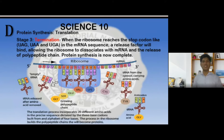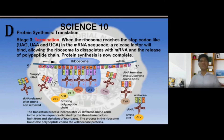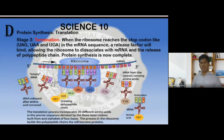The third stage is termination. When the ribosome reaches a stop codon — UAG, UAA, or UGA — in the mRNA sequence, a release factor will bind, allowing the ribosome to dissociate from the mRNA and the polypeptide chain to be released. Protein synthesis is now complete. The diagram shows the complete process of translation, whereby the action of ribosomes and transfer RNA develops and produces a growing chain of amino acids to form proteins.